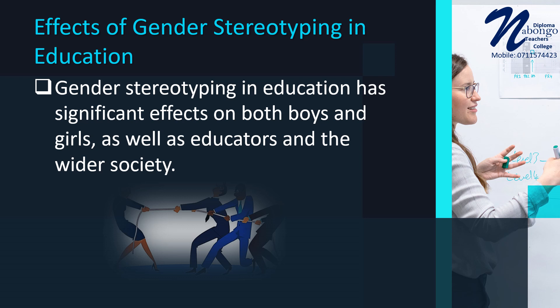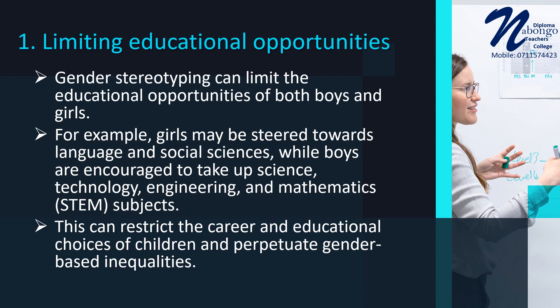Effects of gender stereotyping in education: gender stereotyping in education has significant effects on both boys and girls, as well as educators and the wider society. Number 1 — Limiting Educational Opportunities: gender stereotyping can limit the educational opportunities of both boys and girls. For example, girls may be steered towards language and social sciences, while boys are encouraged to take up STEM subjects. This can restrict the career and educational choices of children and perpetuate gender-based inequalities.